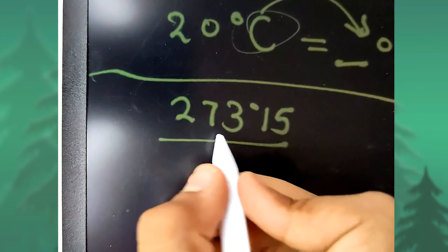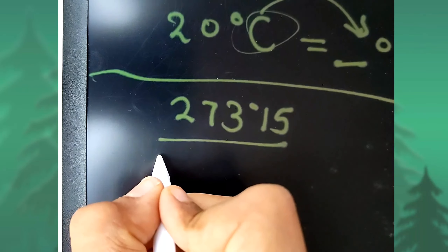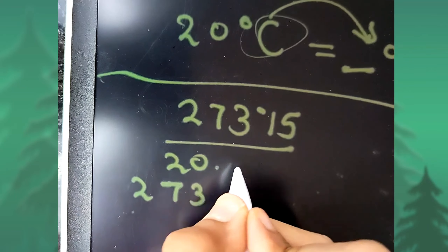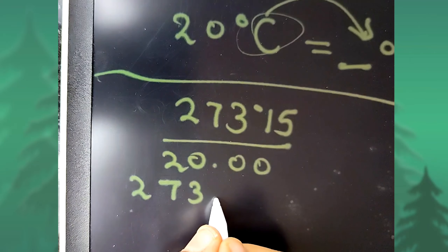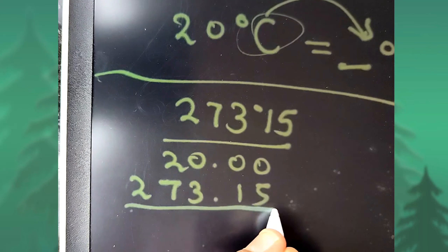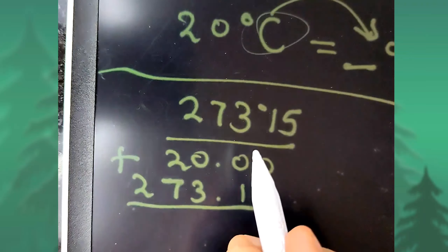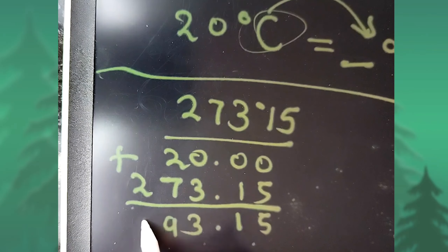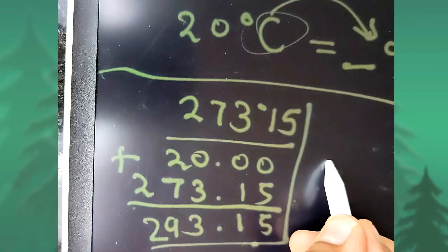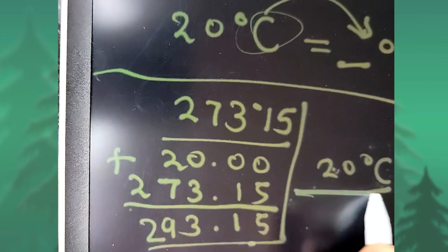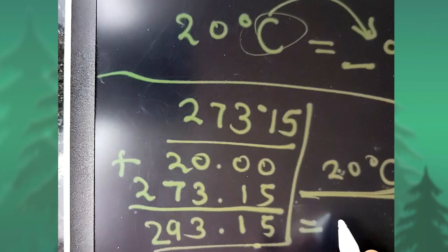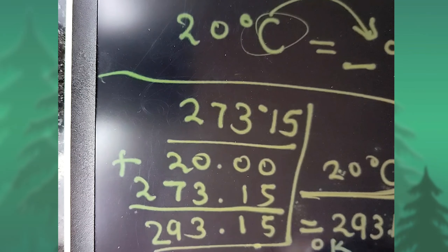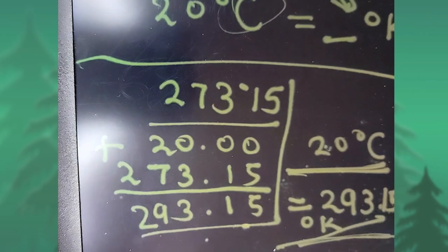Adding 20 and 273.15: we get 2, then 9, then 3, then 0.15, giving us 293.15. So 20 degree Celsius equals 293.15 degree Kelvin. This is our answer.